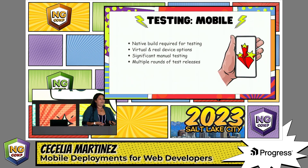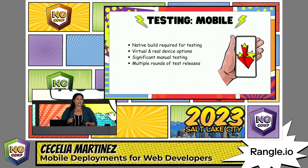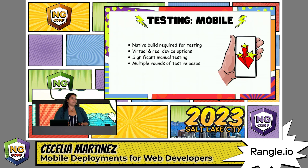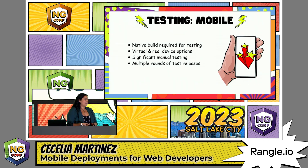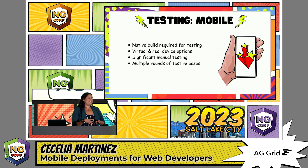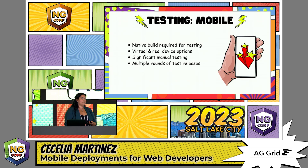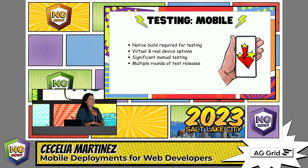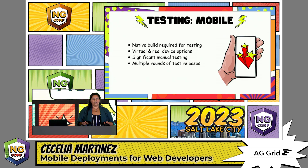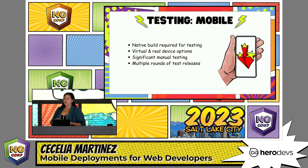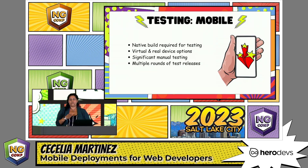On the mobile side, you have to have a native build — that native binary — already compiled before you can test. So out of the gate, you already have a much more complex testing process. Once that native binary has been created, you can install it on either virtual or real devices to test your application. This requires a significant amount of manual testing. The vast majority of mobile developers will do manual testing, and typically that manual testing happens over multiple rounds, promoting your application version through multiple rounds before it's ready for release.